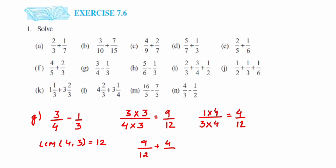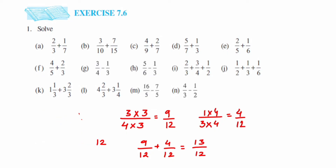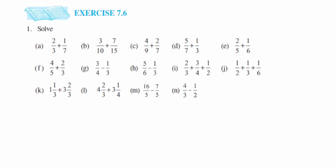Now we have 9 by 12 minus 4 by 12. Since denominators are the same, subtract the numerators: 9 minus 4 is 5, giving 5 by 12. We cannot cancel these numbers further, so we leave it here. If you are able to cancel, bring it to the reduced form.